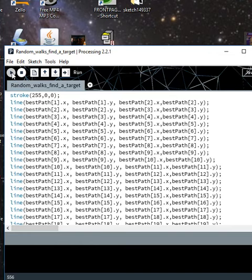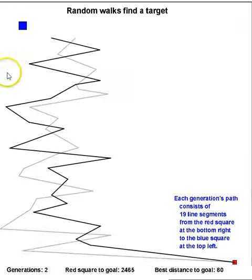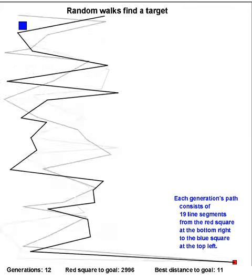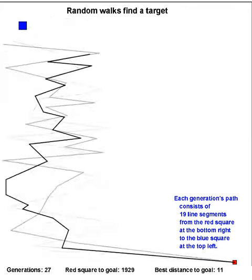Okay, let's see what's going on here. We have random walks that find a target. What does this mean?